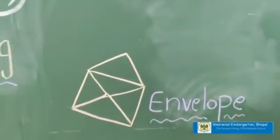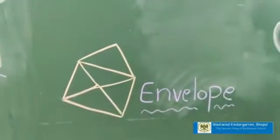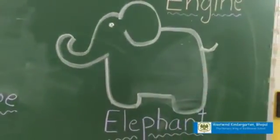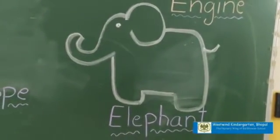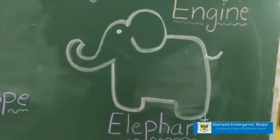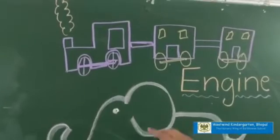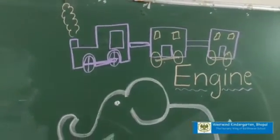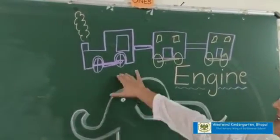What is this? Envelope. Oh, wow, what is this? This is big elephant. What is this, children? Engine. What is this? Engine.